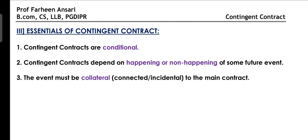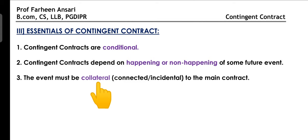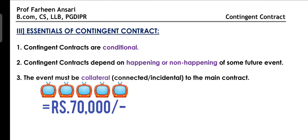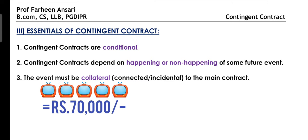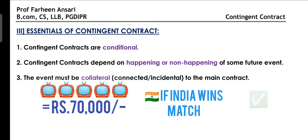Now let's understand the essential requirements of a Contingent Contract. Number 1: a Contingent Contract is conditional. Number 2: it is dependent on the happening or non-happening of some future event. Number 3, and most importantly: the event should not be mere performance or consideration — it should be collaterally connected to the main contract. For example, if I promise to give you 5 television sets and you promise to pay 70,000 rupees, that is not a contingent contract because your obligation depends on mere performance. But if I promise to give you 5 television sets when India wins, then it is a contingent contract because my obligation arises on an event collaterally connected to the main contract.